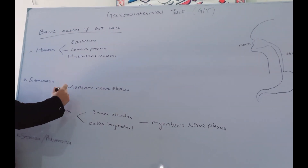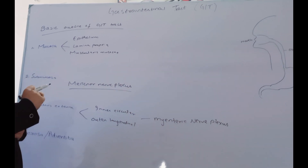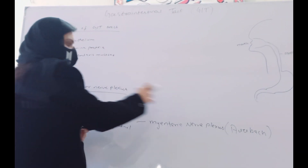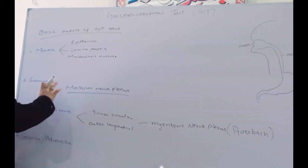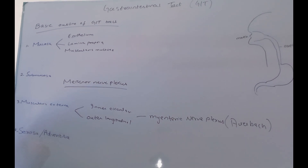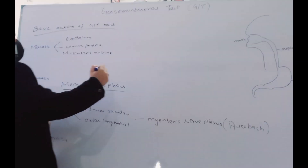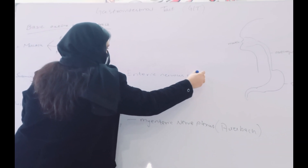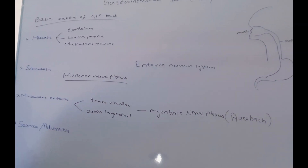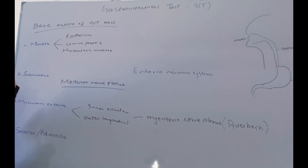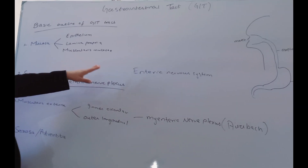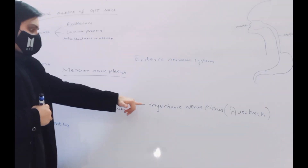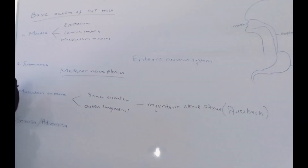In the submucosa you will find the Meissner's nerve plexus, and the Myenteric nerve plexus is also known as the Auerbach's plexus. These two nerve plexuses — the Meissner's and the Myenteric — collectively constitute the enteric nervous system of the GIT tract. This system is different from the autonomic nervous system, which includes the sympathetic and parasympathetic systems. In the GIT tract, all the swallowing and digestion processes are under the enteric nervous system, which is formed by the Meissner's nerve plexus located in the submucosa and the Myenteric nerve plexus located between the inner circular and outer longitudinal muscle layers.